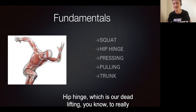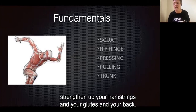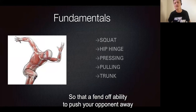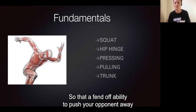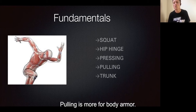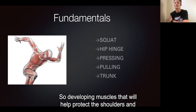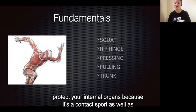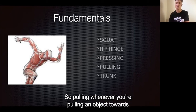Hip hinge — which is our deadlifting — to really strengthen up your hamstrings, glutes, and back. Pressing: the fend-off ability to push your opponent away is really important. Pulling is more for body armour — developing muscles that help protect the shoulders and internal organs, because it's a contact sport, as well as strengthening your neck muscles.